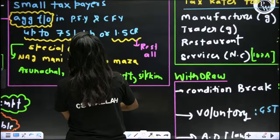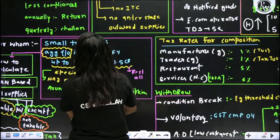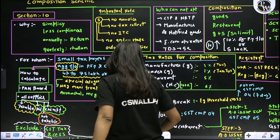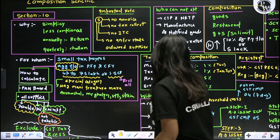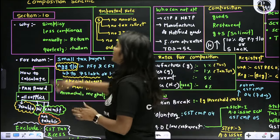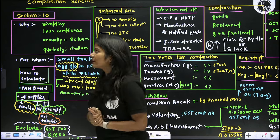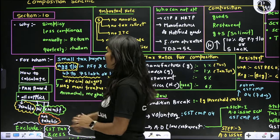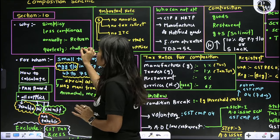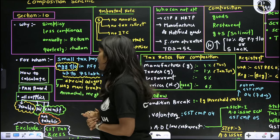First of all, let's start with Section Number 10 — Composition Scheme. Why do we take the Composition Scheme? Because if we take this, our compliance will be very simple. The return filing will be done annually, and the payment will be done quarterly.